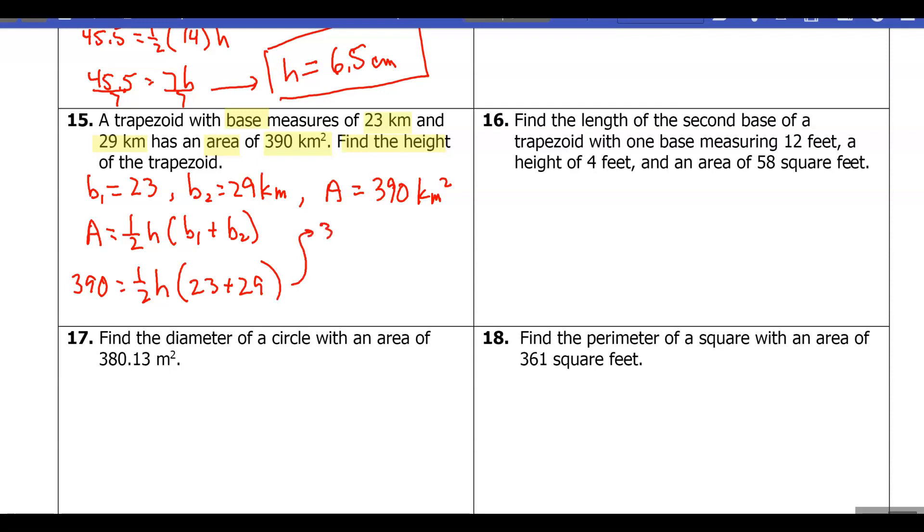So I've got 390 equals—if I add these two up here, that's going to be 52.